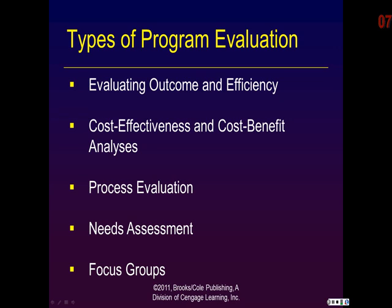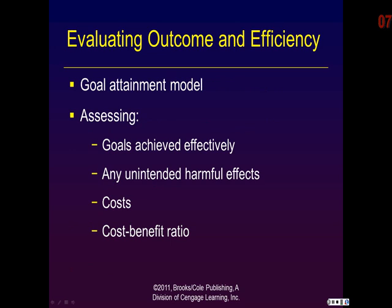Typically, program evaluations look at outcomes — whether or not you're achieving the goal and how efficiently you're doing that — cost-benefit analysis. They do that through process evaluations, needs assessments, and focus groups. Outcome evaluation essentially follows a goal attainment model: does the program do the things it says it's going to do, and does it do that efficiently? Does it achieve its goals without unintended harmful effects? And then there's the actual cost and the cost as it relates to the benefit.